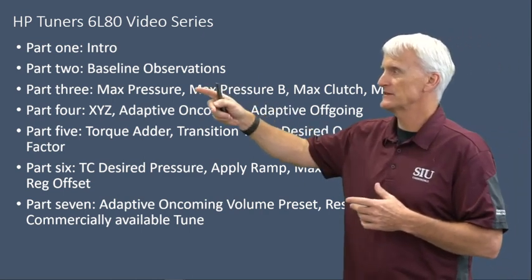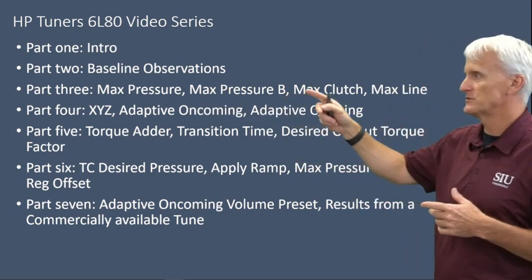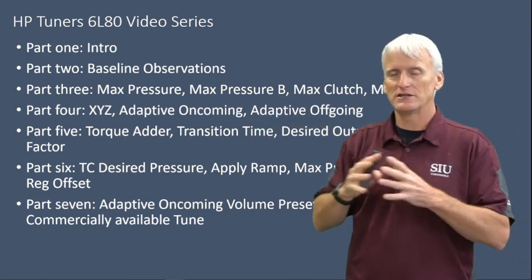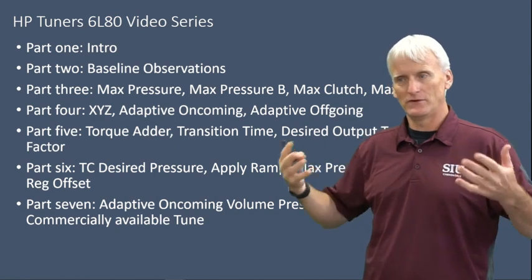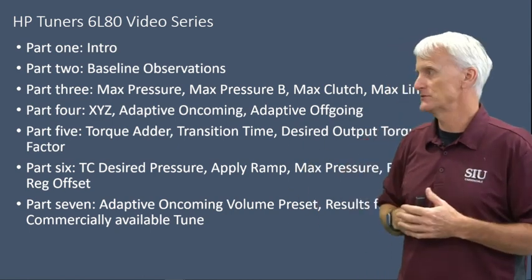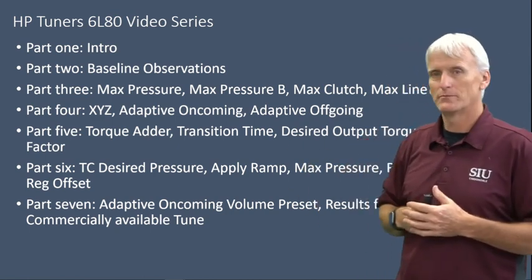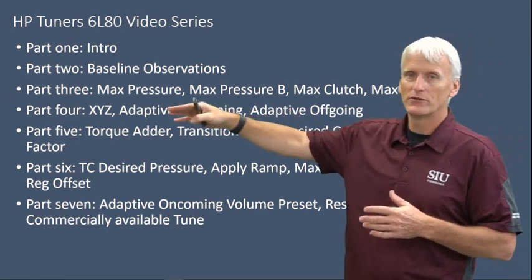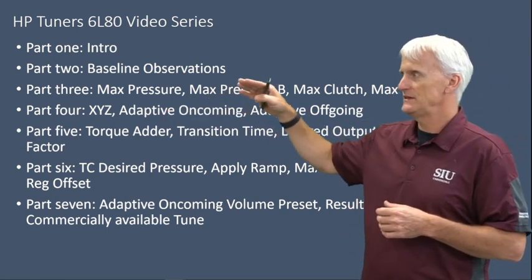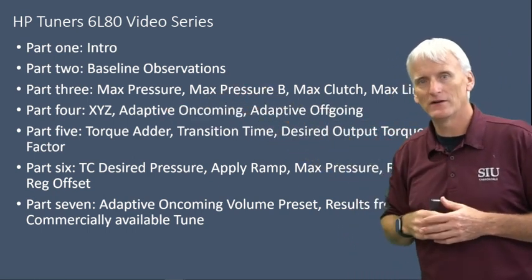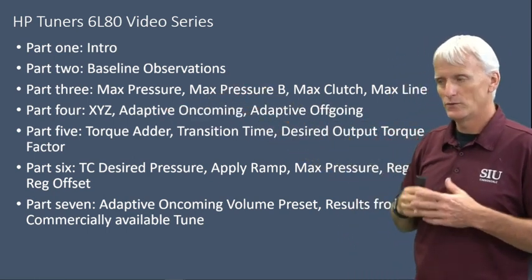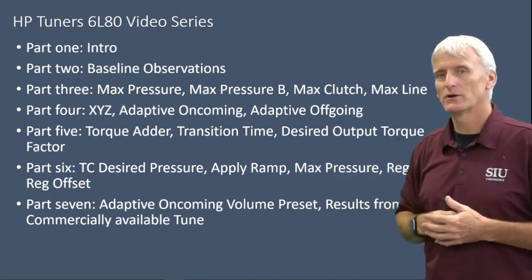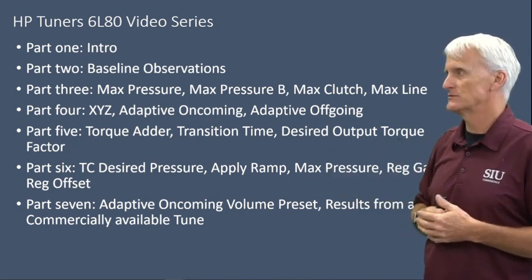Part three is max pressure, max pressure B, max clutch, and max line. I went through and changed those and we viewed whether or not the pressures actually change like you would expect. In part four I went through XYZ, adaptive oncoming, and adaptive offgoing. We changed those calibrations and tried to see what kind of pressure changes actually happen in the transmission.